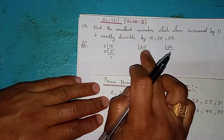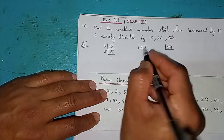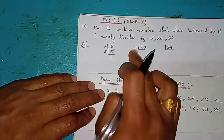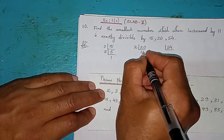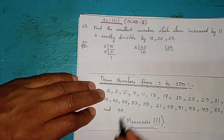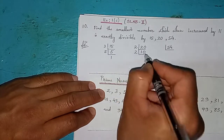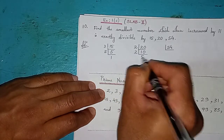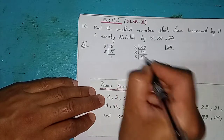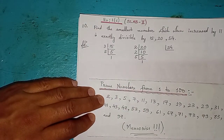Now prime factorization of 20: because it ends in zero, it's an even number, so we divide by 2. Two tens are 20. 10 is also even so we divide by 2 again: 2 fives are 10. Then 5 is a prime number, so 5 ones are 5.